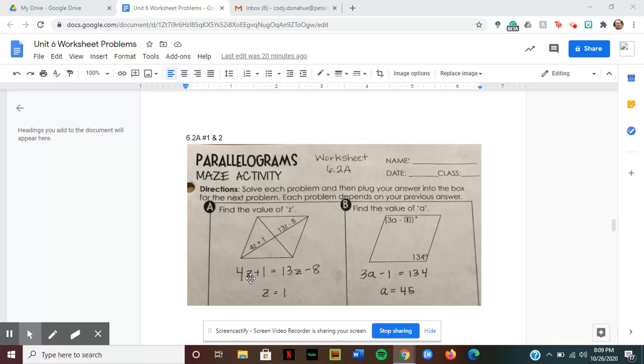If I get 4z plus 1 equals 13z minus 8, I didn't do the in-between step here. I just went ahead and solved. You would basically have to add 8 and subtract 4z to get 9 equals 9z, then divide both sides by 9. You would get z equals 1 for part a.